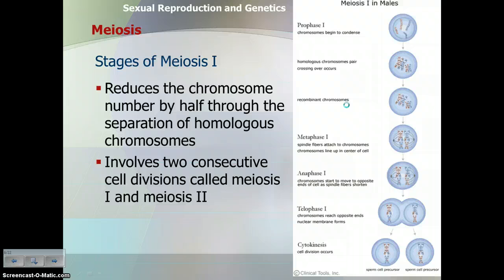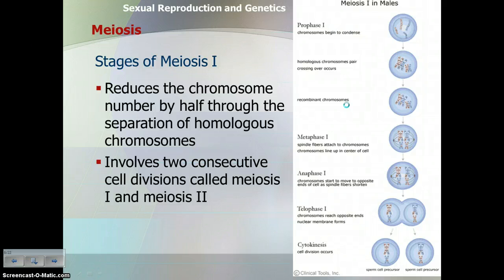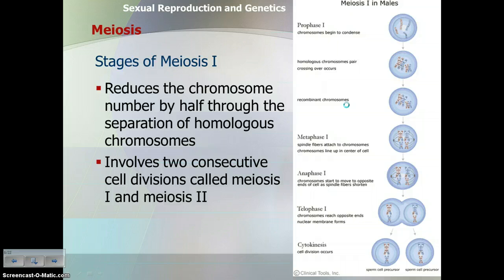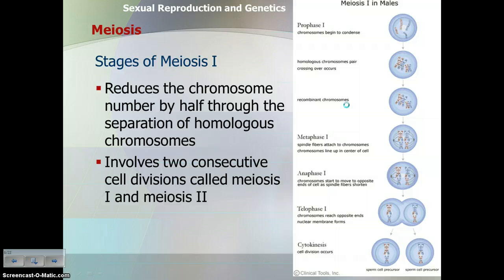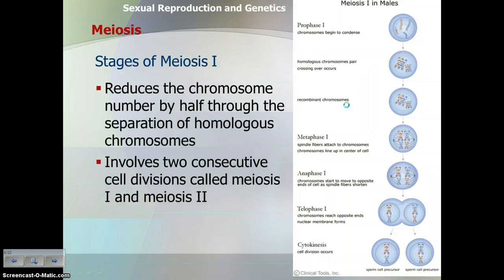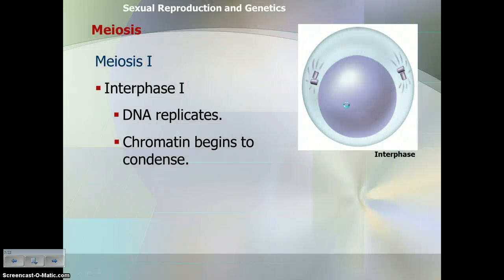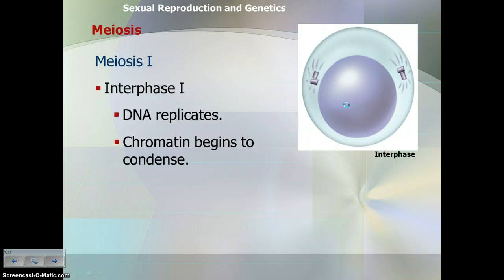The process of meiosis reduces the chromosome number in half through two nuclear divisions — meiosis one and meiosis two. Think about mitosis: we went from one parent cell to two genetically identical daughter cells. In meiosis, we go from one parent cell to four daughter cells that are genetically different and have half the number of chromosomes. We divide the nucleus twice to end up with four haploid daughter cells.